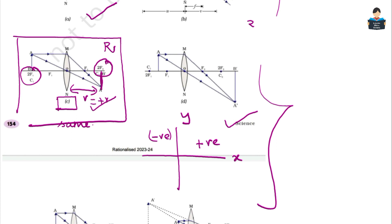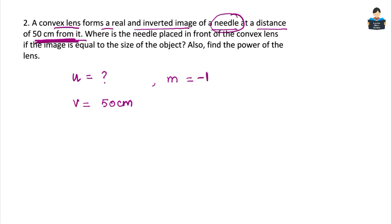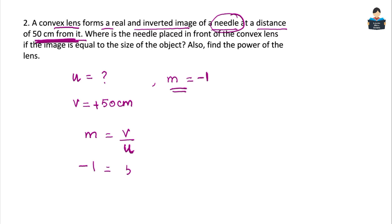Since the image is formed on the right-hand side of the lens, the v value is positive. So v = +50 cm. With magnification equal to minus 1 and v = +50 cm, we use the magnification formula: m = v/u. So minus 1 = 50/u.